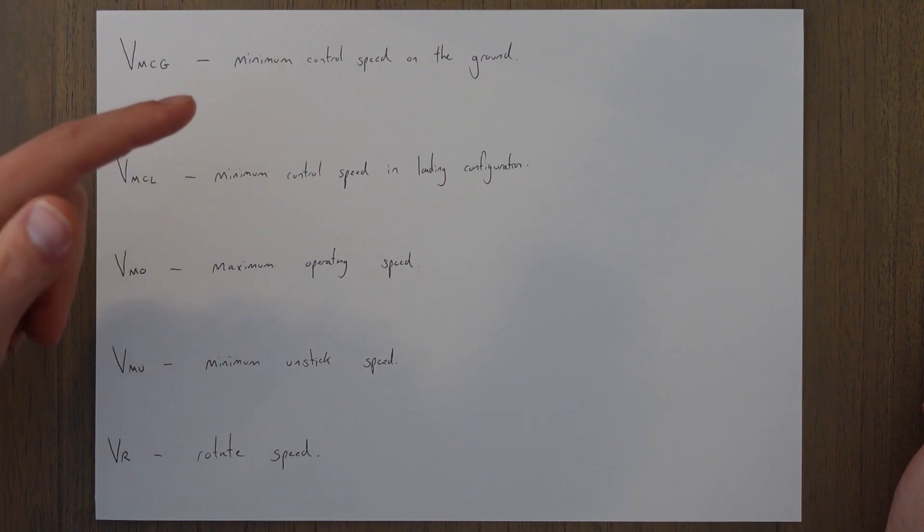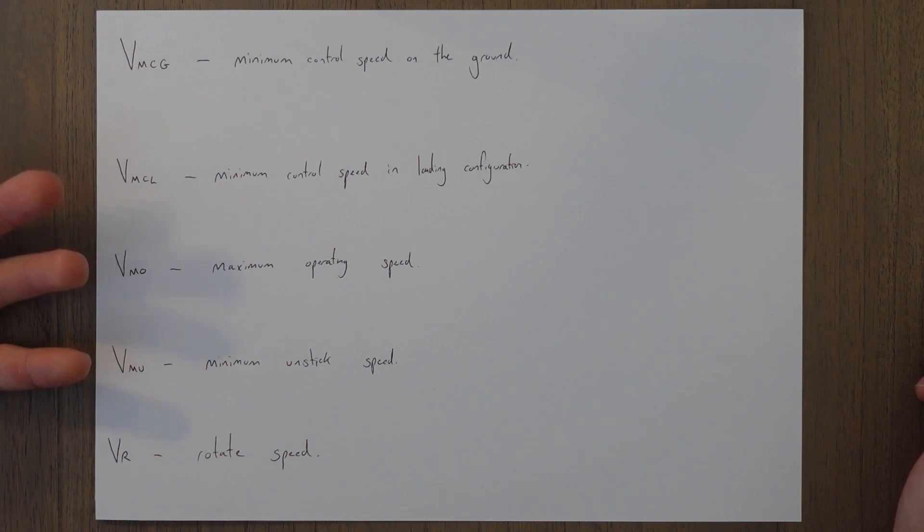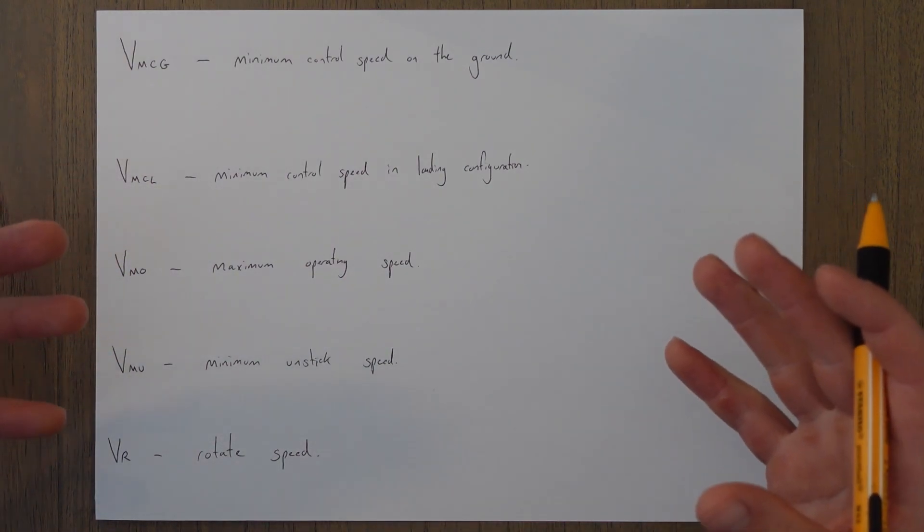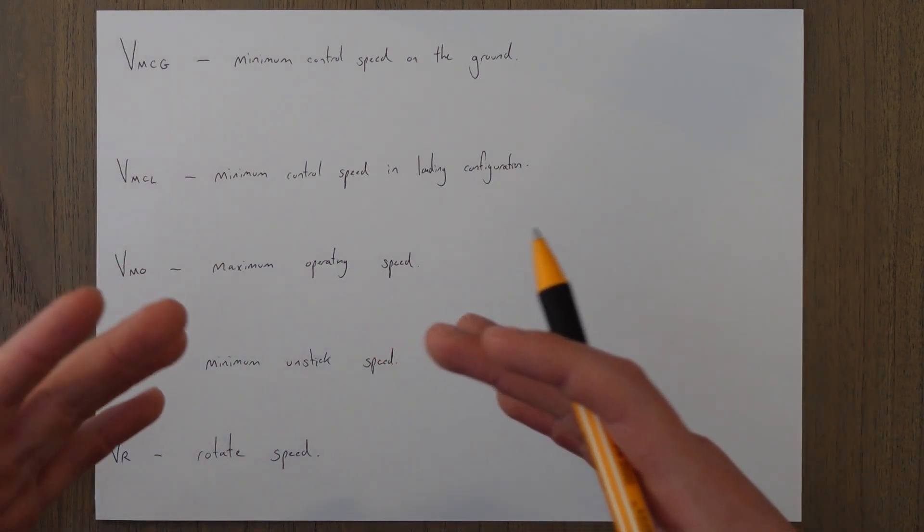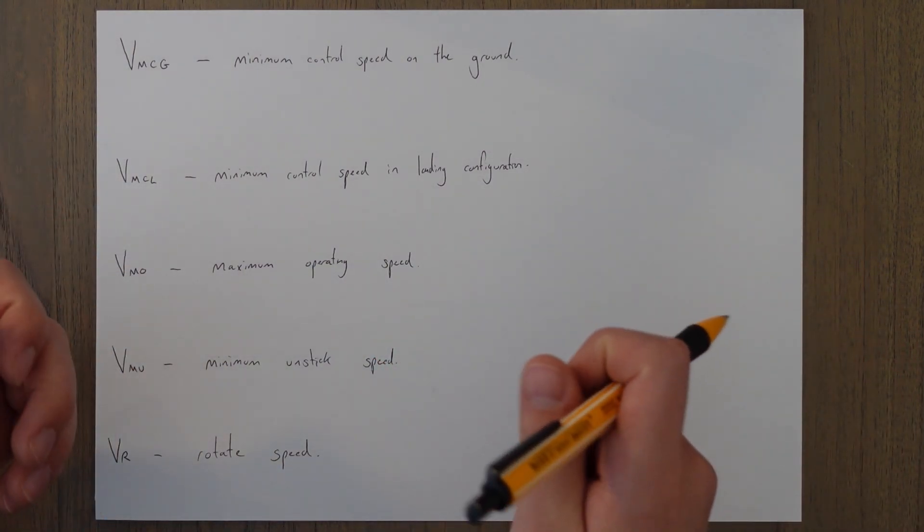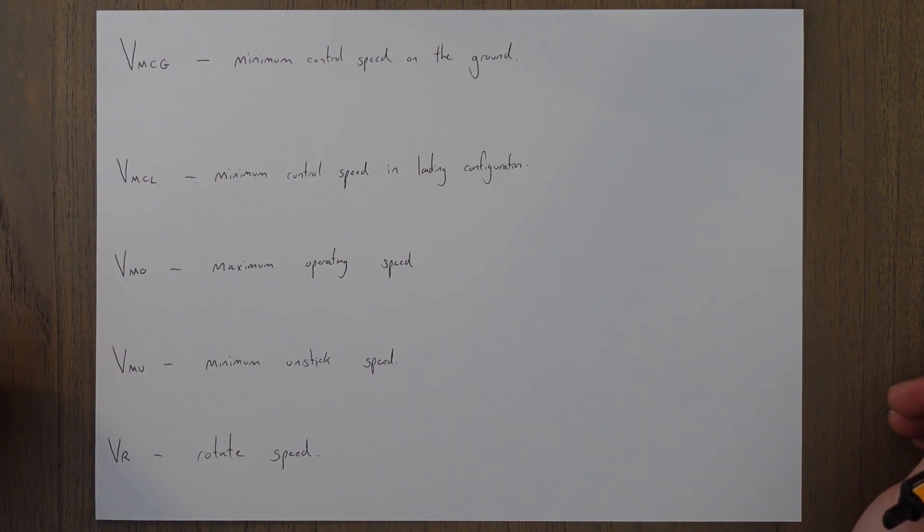VMCG standing for the minimum control speed on the ground. This is the minimum speed that the aircraft is still controllable at with the critical engine inoperative while the aircraft is fully on the ground using only the aerodynamic surfaces, meaning no actual steering from the nose wheel steering.